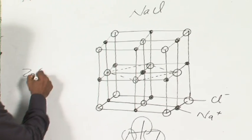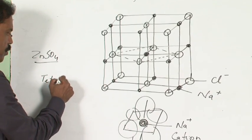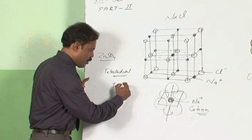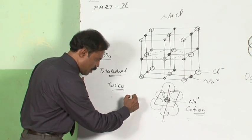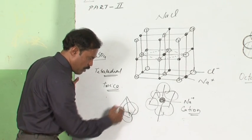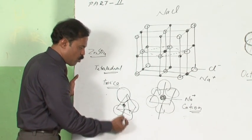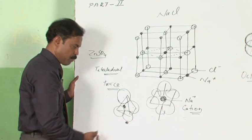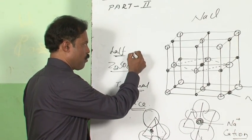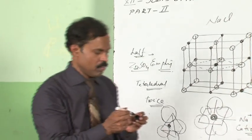In zinc sulfate crystal, zinc ions are in tetrahedral voids. The number of tetrahedral voids created is twice the number of spheres. This is because each sphere in the first layer creates one void above and one below. Zinc occupies only half the number of tetrahedral voids — half the tetrahedral voids remain empty.